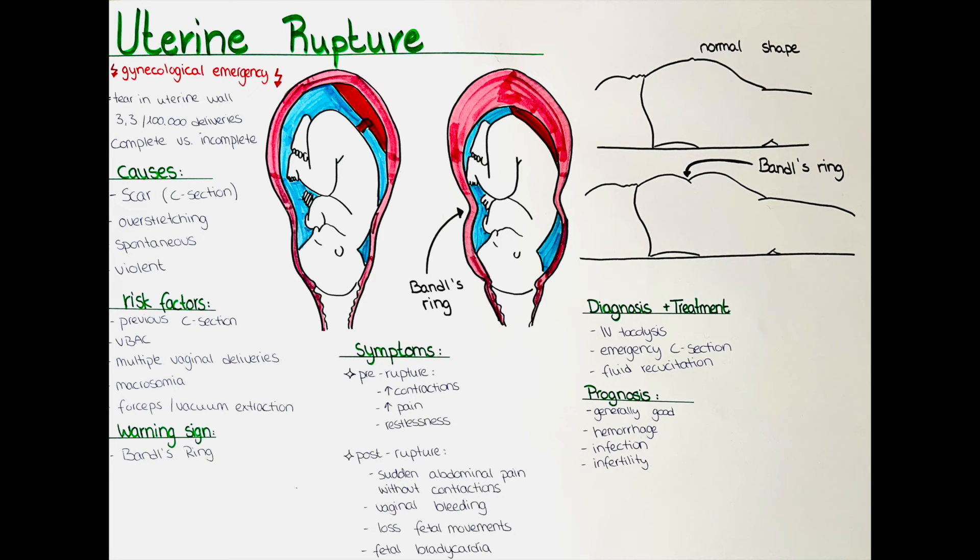The post-rupture symptoms occur after the rupture has actually occurred. They include a sudden onset of abdominal pain in the absence of contractions. Often vaginal bleeding occurs. We usually also detect a loss of fetal movements and bradycardia or absence of fetal heart tones.